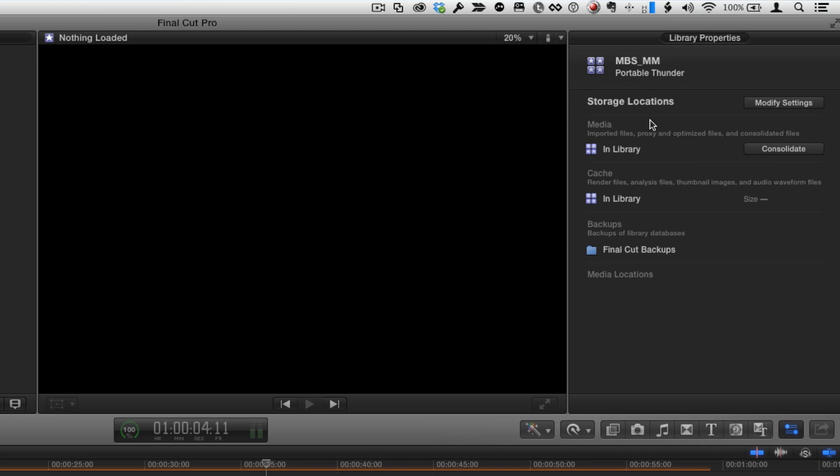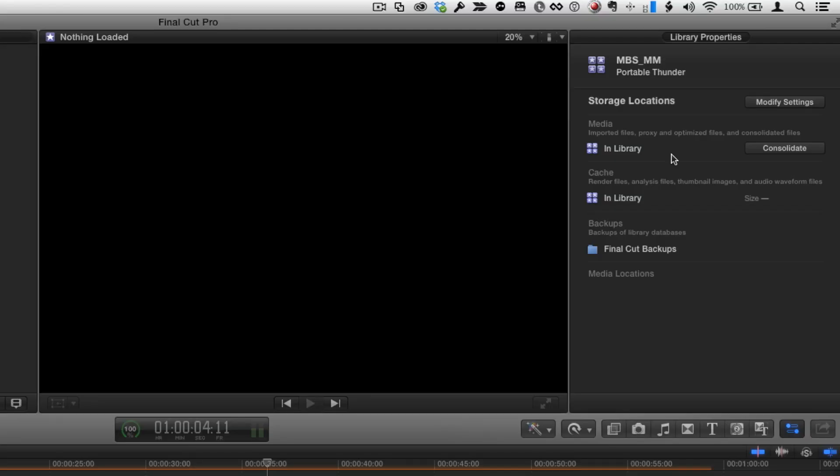Media means the media that you're going to bring into your library. So anything you import - video, still images, photos, graphics, anything constitutes media. Anything that you're going to import, that tells you right here where it's going to go. And by default, it's going to go in the library, which if you've already been using Final Cut Pro 10.1 or you've been watching our tutorials, you know that is called a managed library. All the media that you import will be copied into the library.